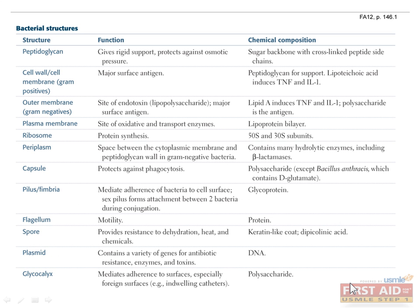Bacteria are single-celled prokaryote organisms with several structural elements that distinguish them from eukaryotes. The table here lists these structural elements of bacteria and their functions. We will highlight how these structures vary between gram-positive and gram-negative organisms in the next fact.